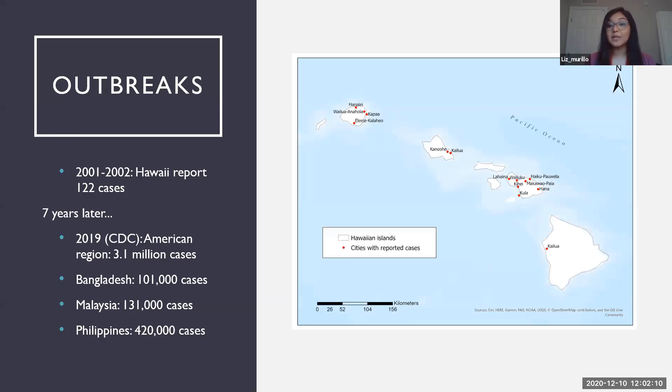Some notable outbreaks I wanted to highlight, specifically the 2001 Hawaiian outbreak that reported 122 cases. This is just a quick map of the Hawaiian Islands with the cities that had cases in them. And although this one was in 2001, seven years later, we still have much larger outbreaks occurring across the world. For example, the American region reported 3.1 million cases. Bangladesh had 101,000 cases. Malaysia had 131,000 cases, and the Philippines reported 420,000 cases.